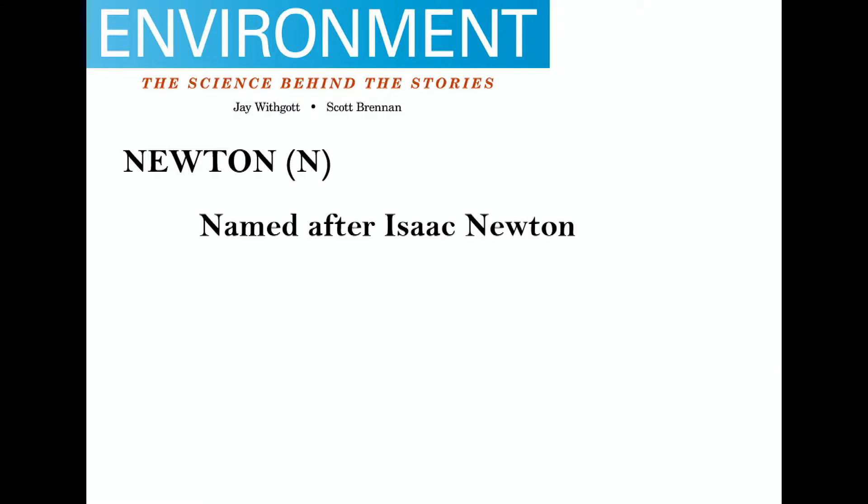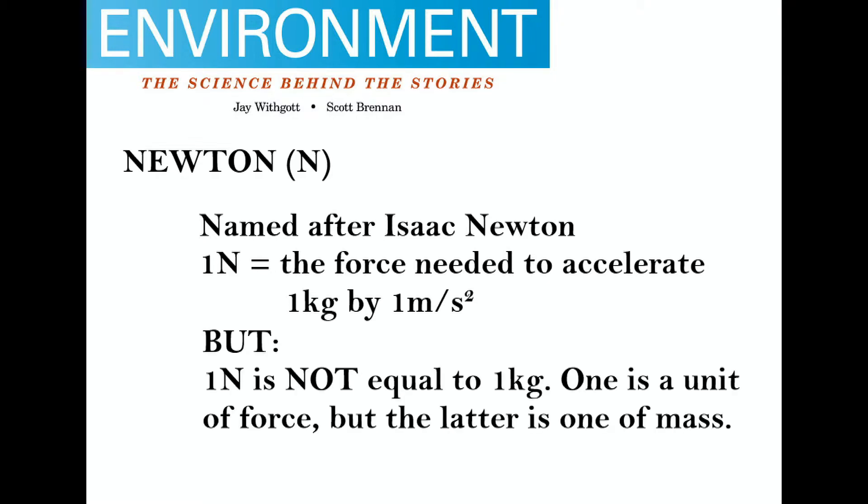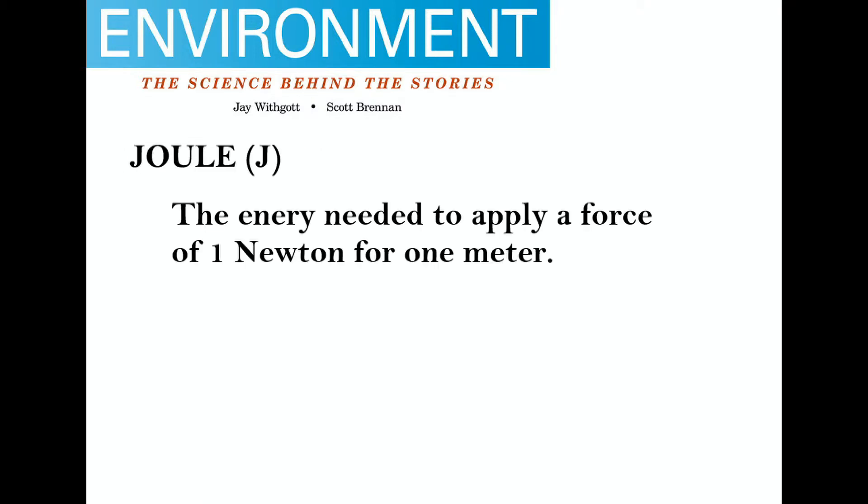There are three different units of energy. The first unit is the Newton, named in honor of Isaac Newton. One Newton equals one kg of mass at the rate of one meter per second squared. However, note that one Newton is not equal to the weight of one kg.